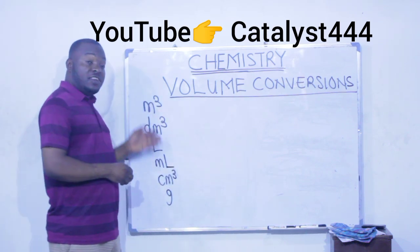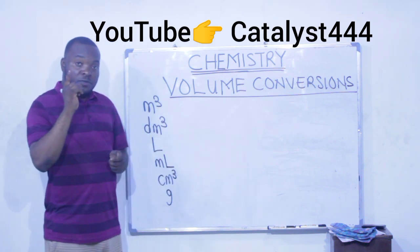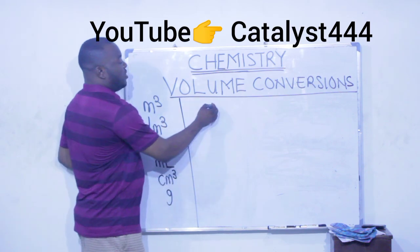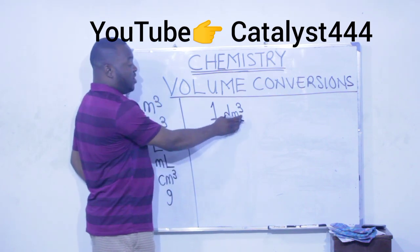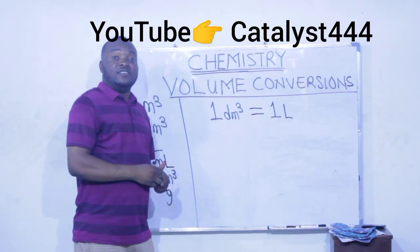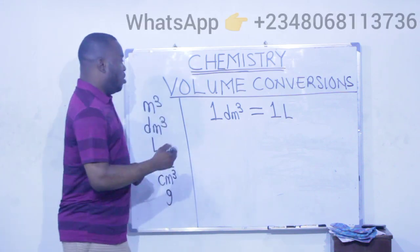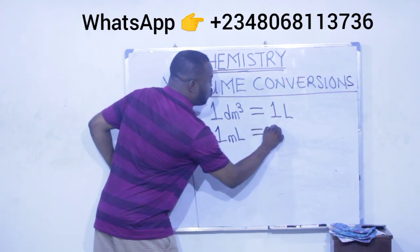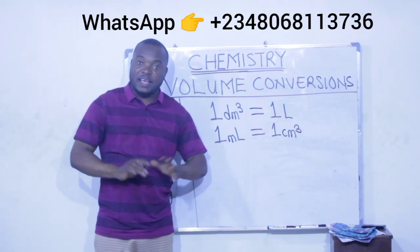Now let us see the relationship between these units and how to convert from one to the other. Note that one dm cube (decimeter cube) is equal to one liter — dm cube and liter are the same in value. Also, one milliliter is equal to one centimeter cube, meaning milliliter and centimeter cube are the same.